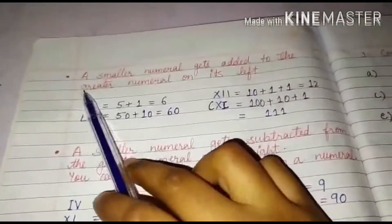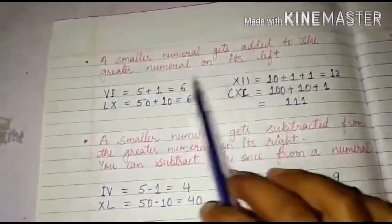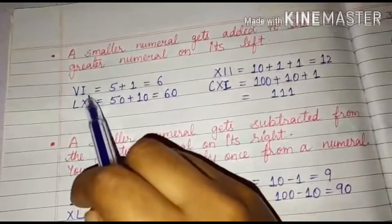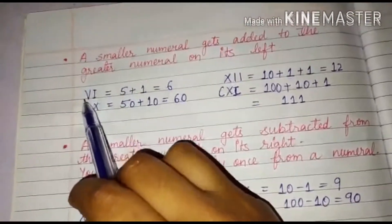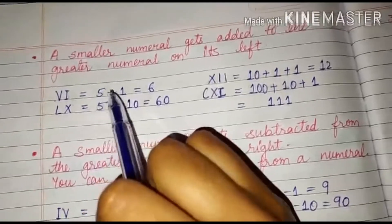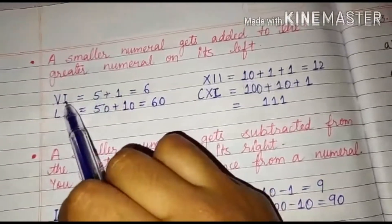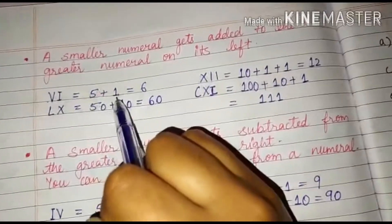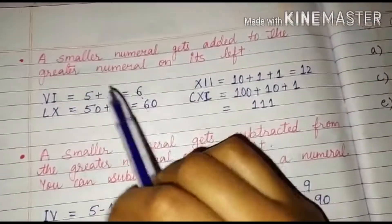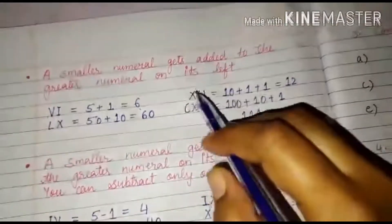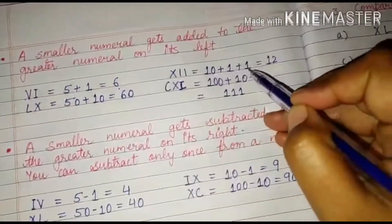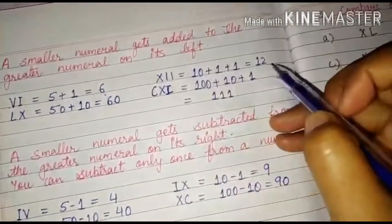Next point, a smaller numeral gets added to the greater numeral on its left. That means if you are having a smaller numeral to the left of a greater number, you have to add them like VI. V is 5 and I is 1. So I is at the left of V, that means you have to add 1 with 5 and you will get 6. In order to write 6, you have to write VI. Next is XII. X is 10, I is 1 and another I is 1. So if we are adding them, we will get 12.